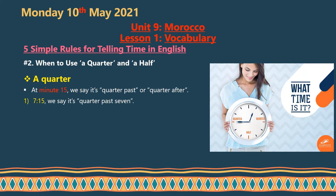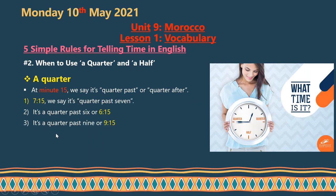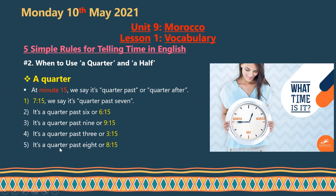More examples: 'a quarter past six' means 6:15. 'A quarter past nine' means 9:15. 'A quarter past three' means 3:15. 'A quarter past eight' means 8:15. And the last: 'a quarter past twelve' means 12:15.